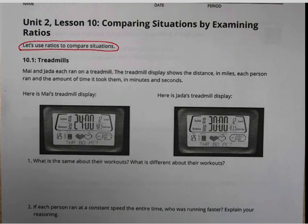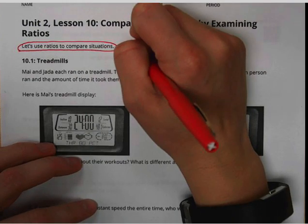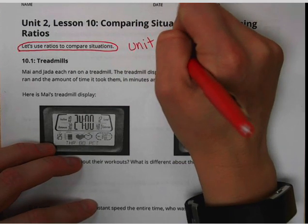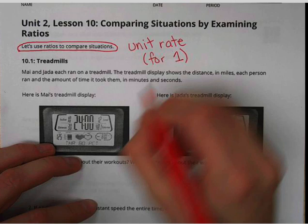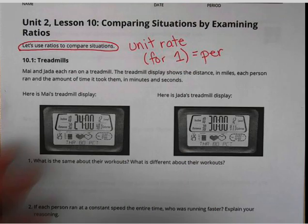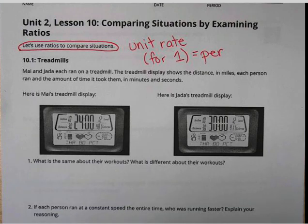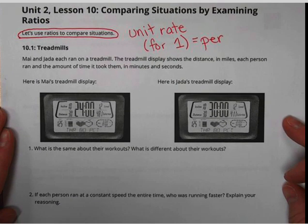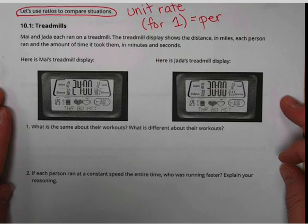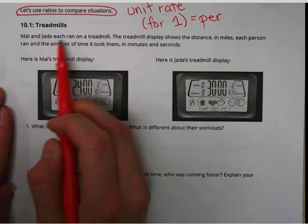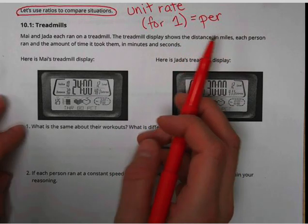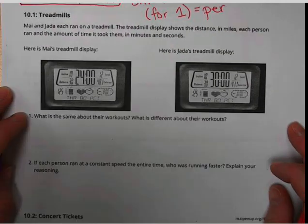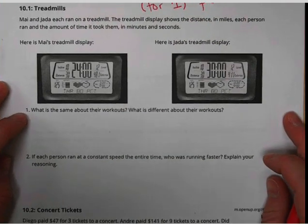To do that, we're going to use the concept that we've been talking about the last couple days about unit rate and how much for one. Remember that 'for one' is also the vocabulary word 'per.' We're going to use that information to help us compare different situations. For example, here at the beginning, these are two treadmill screens. It says Mai and Jada each ran on a treadmill. Here are their treadmill displays—the distance in miles each person ran and the amount of time it took them in minutes and seconds. We want to know some things that are the same about their workouts.